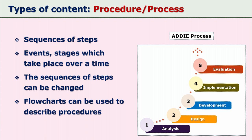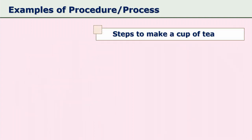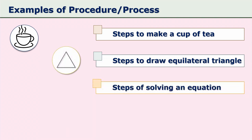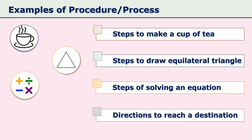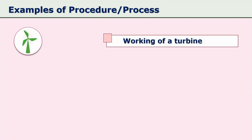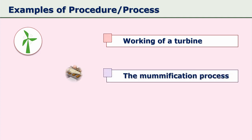Procedures are best described using flowcharts. Examples of procedures include: steps to make a cup of tea, steps to draw an equilateral triangle, steps to solve an equation, directions to reach a destination, the working of a turbine, and the process of mummification.